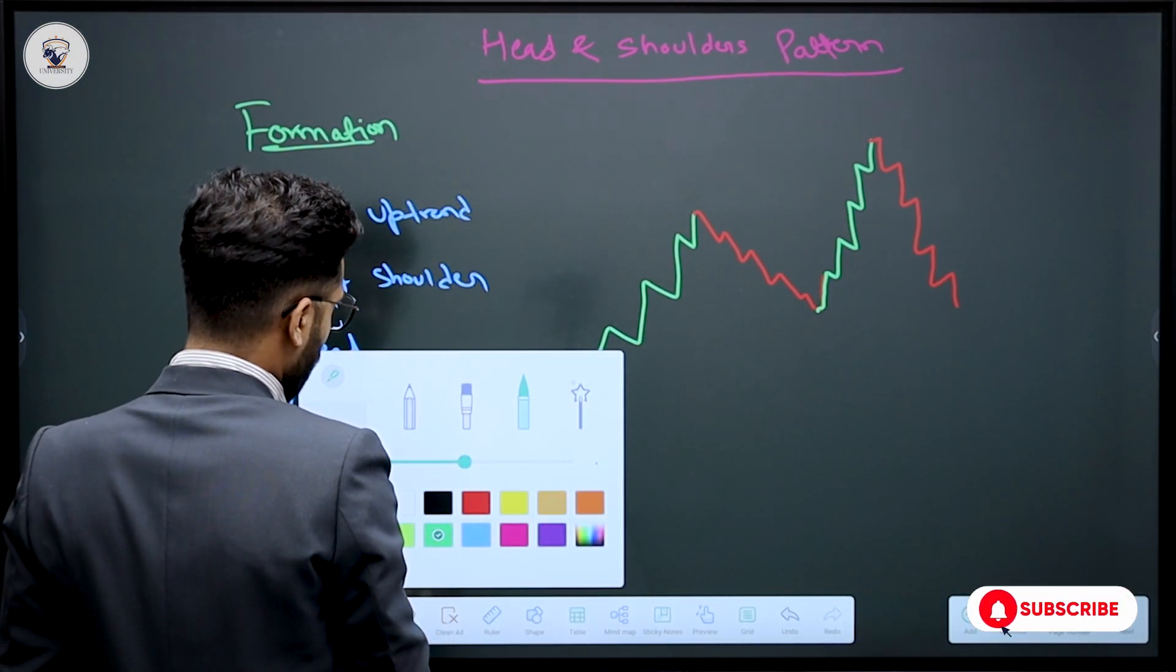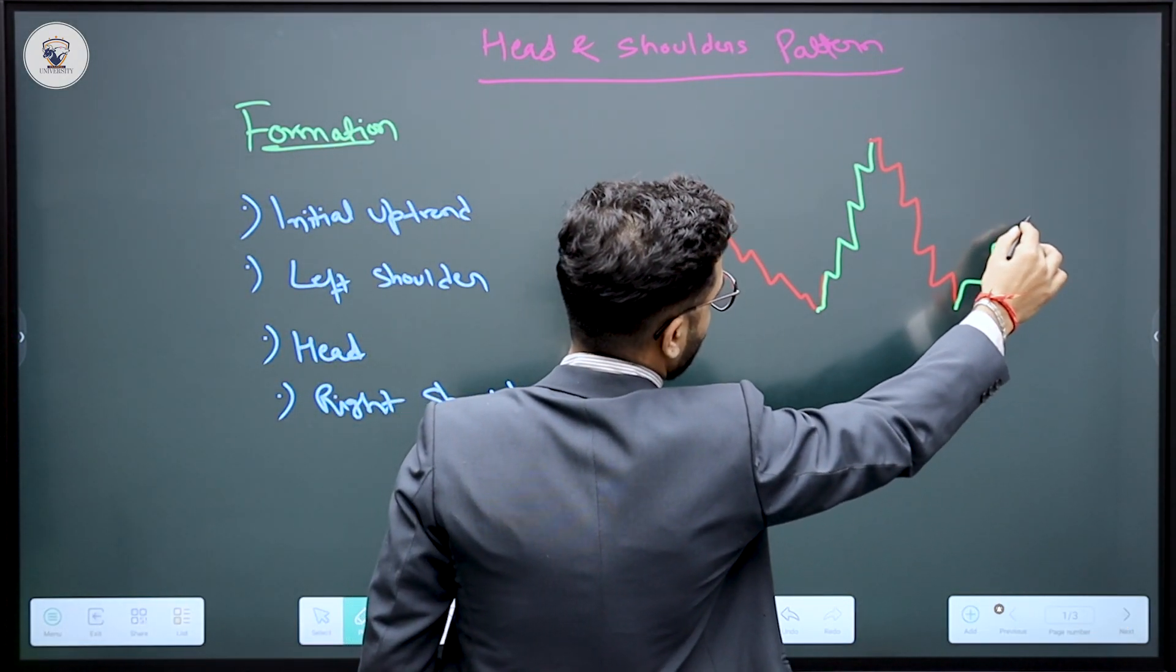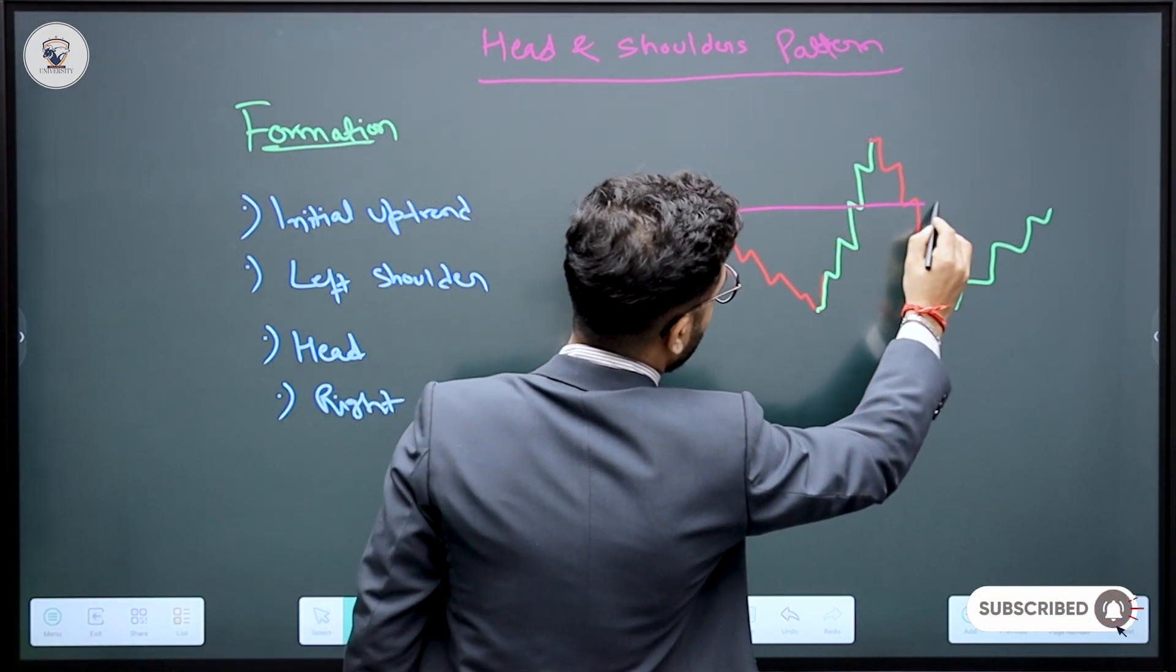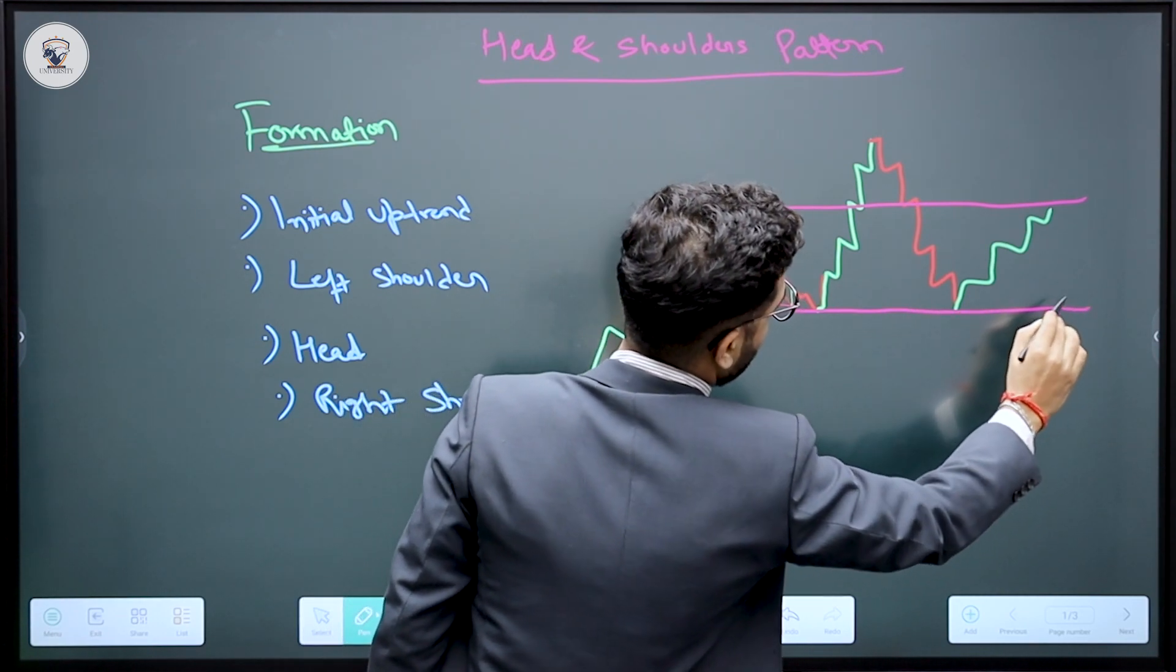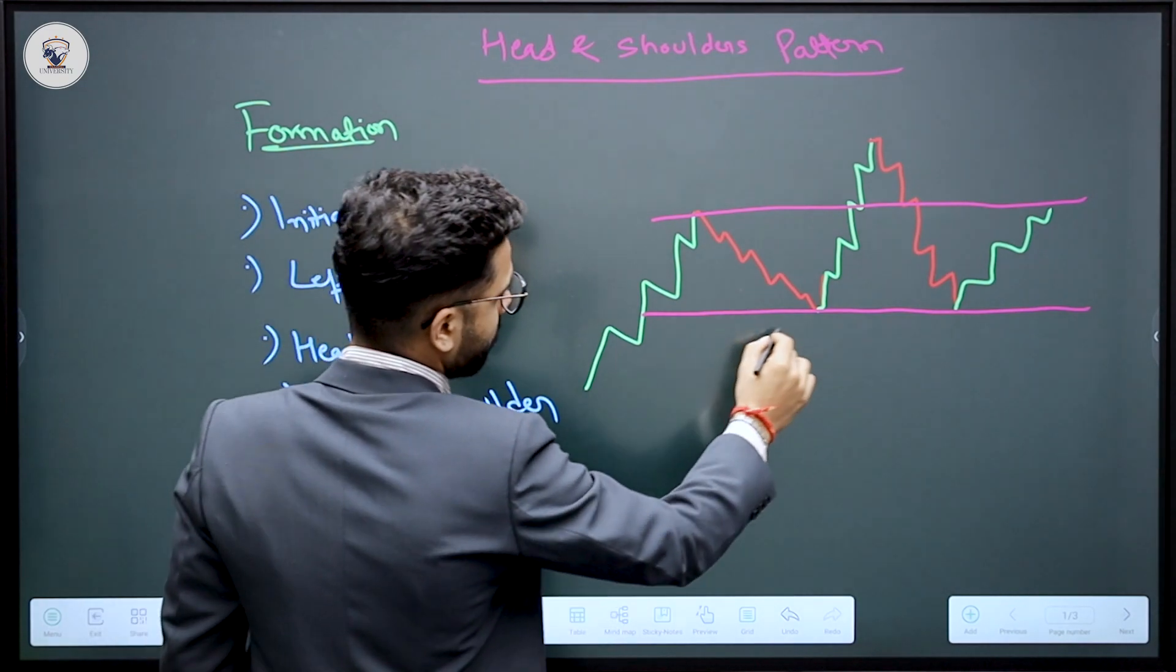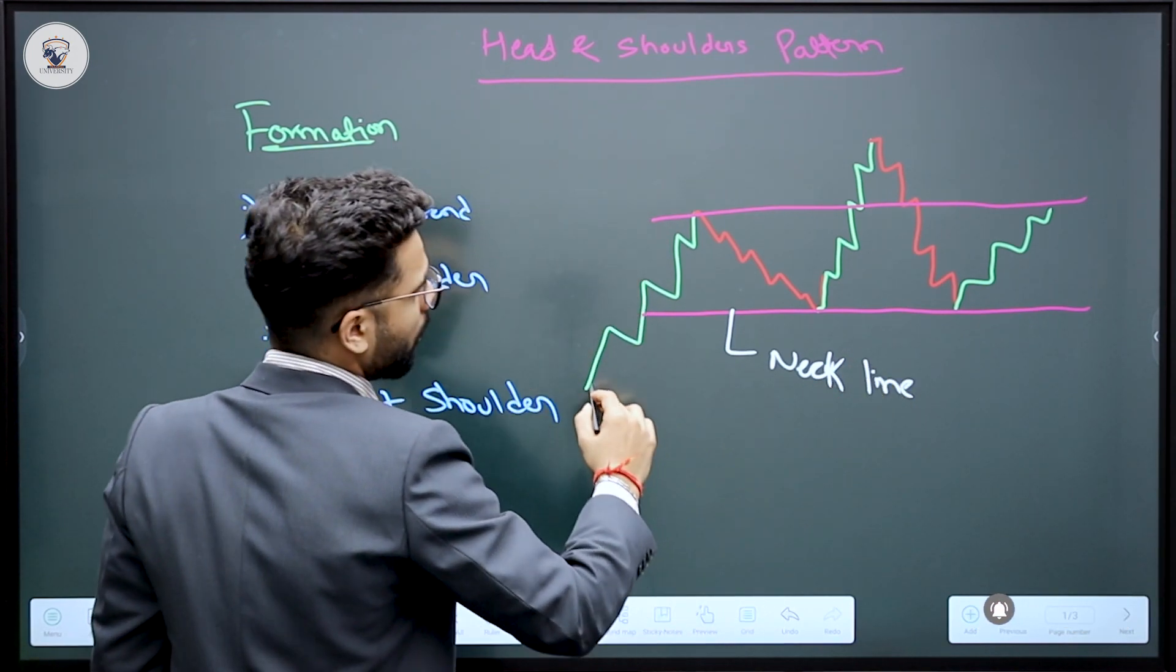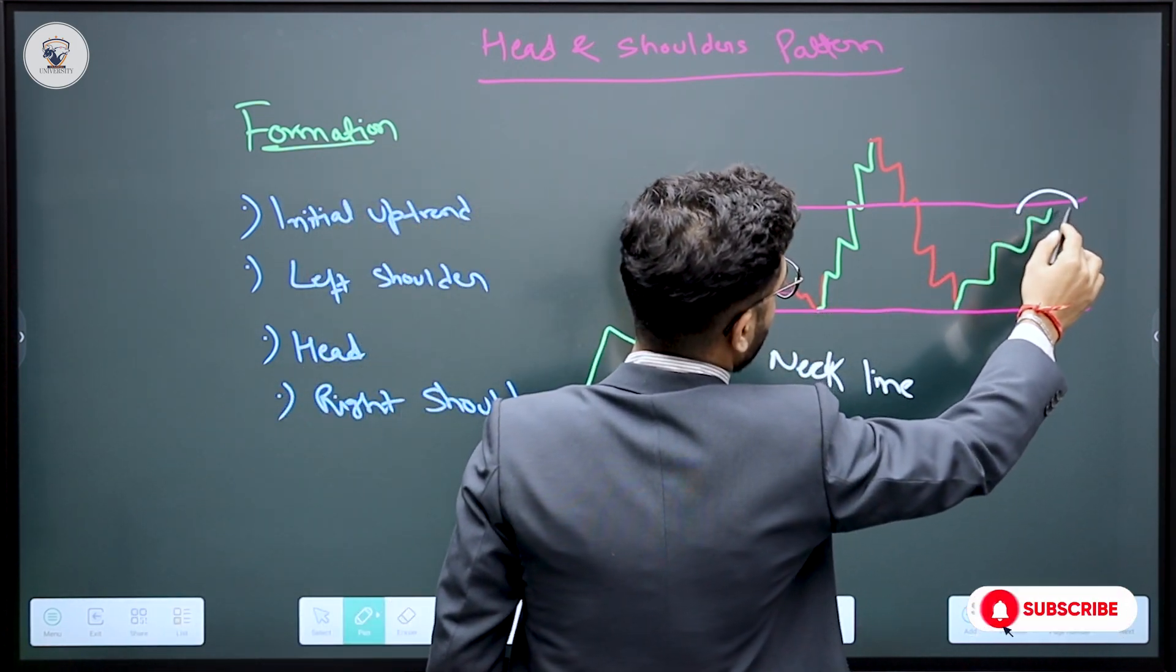And now when the stock has bounced again from here, it went back and stopped again. This is on his own peak. So we draw them lines so that you can understand. This was one line and this is the second line. So we call this neckline. This is your left shoulder.